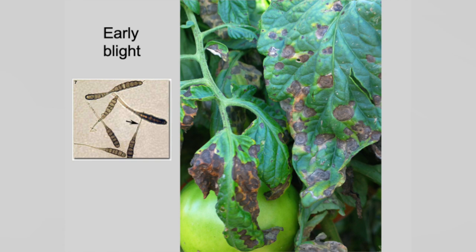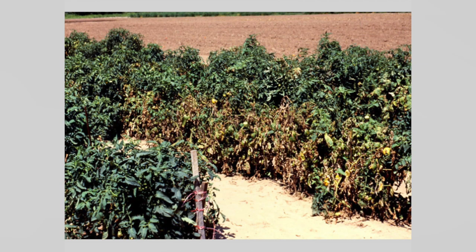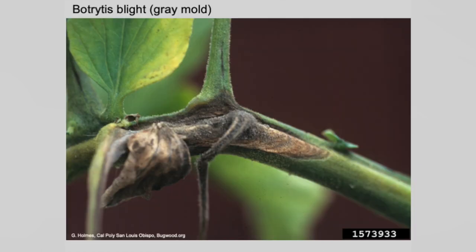We don't see much early blight in Oklahoma, even on commercial potatoes. Basically all those foliar diseases I just showed you work their way up from the bottom to the top of the plant — you'll see the symptoms first on the lower leaves.